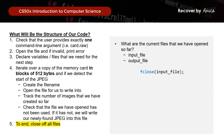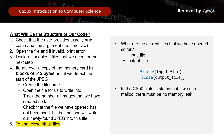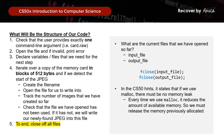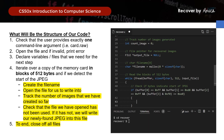To end, we need to close all the files we've opened — that would be input_file and output_file — using fclose. The CS50 hints also state that if we use malloc, there must be no memory leak. Every time we use malloc, it reduces the amount of available memory, so we must release the previously allocated memory using free(filename).